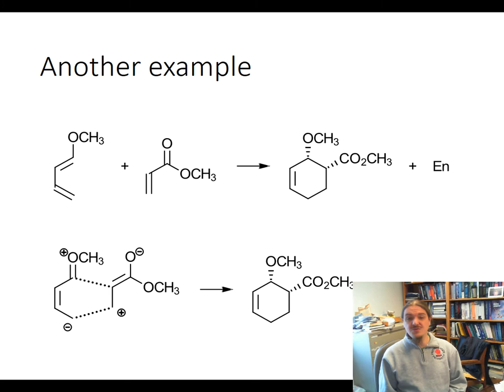So here are the two important resonance contributors. I would encourage you to sit down and make sure that you understand how you can generate those resonance contributors from the original structure. But having the electron donating group at the end of the diene can actually put the negative charge on the far end of the diene. And then the dienophile has a similar resonance contributor to what we saw before.